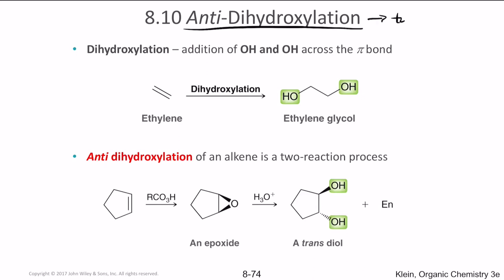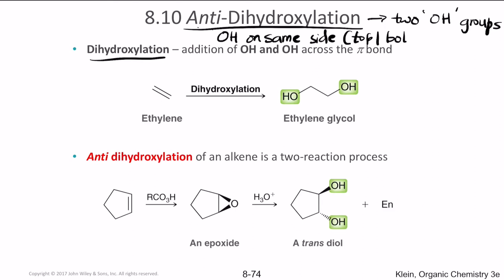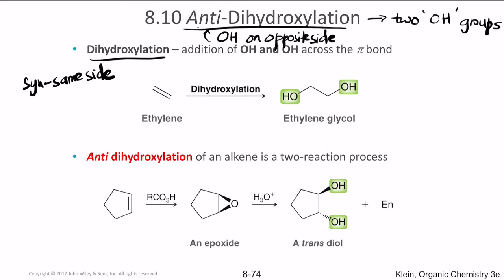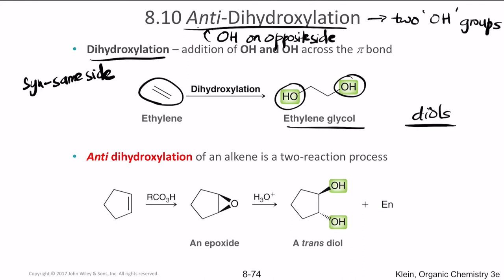Next: dihydroxylation, which is adding two OH groups. There are two types: anti and syn dihydroxylation. In anti-dihydroxylation, the two OH groups end up on opposite sides. In syn-dihydroxylation, both OH groups are on the same side — either both on top or both on bottom. The most common product from dihydroxylation is a diol, which is basically a dialcohol.